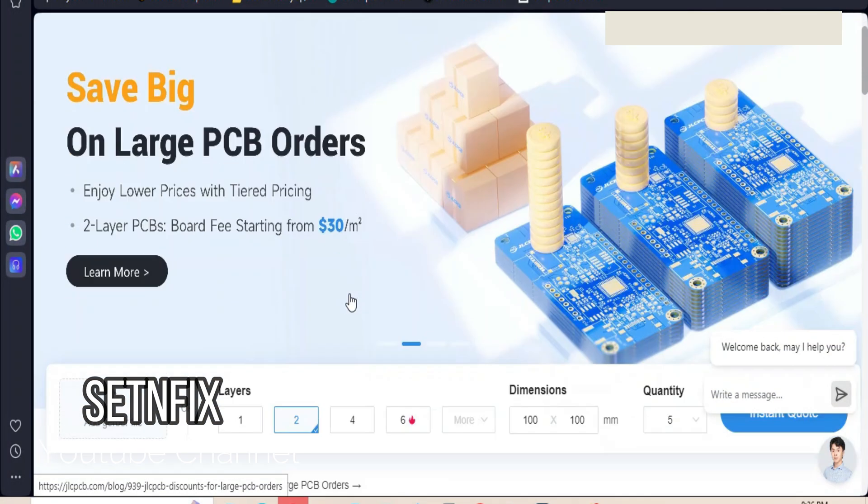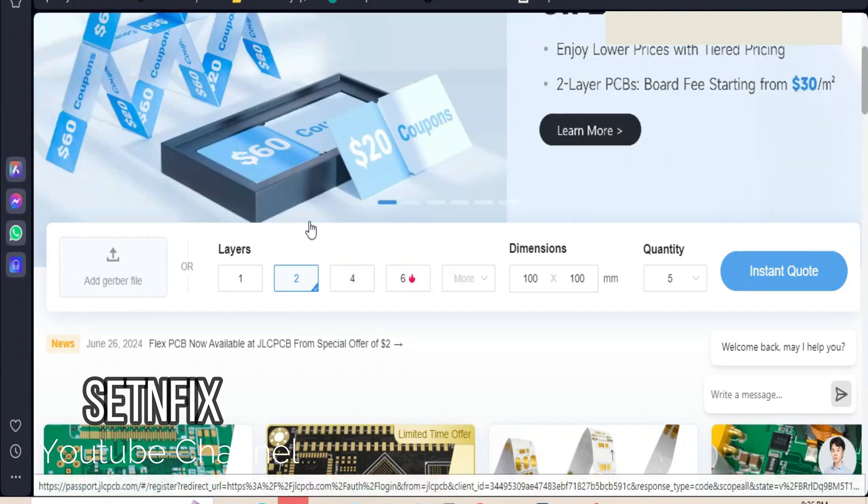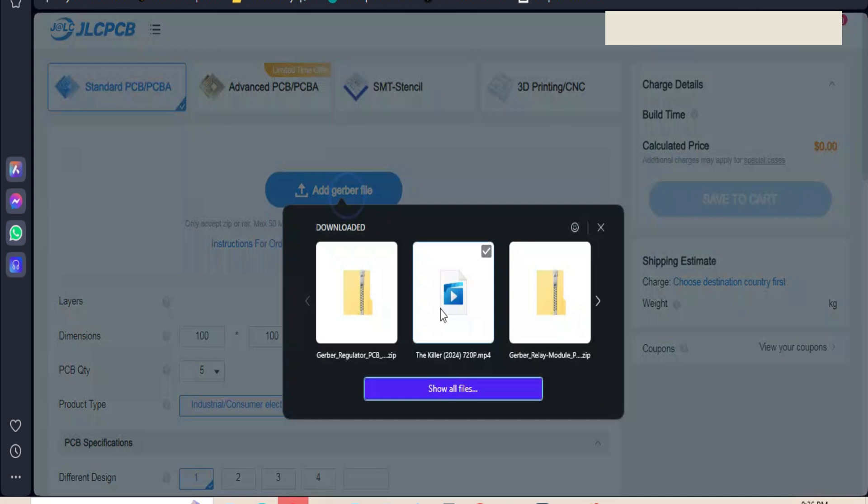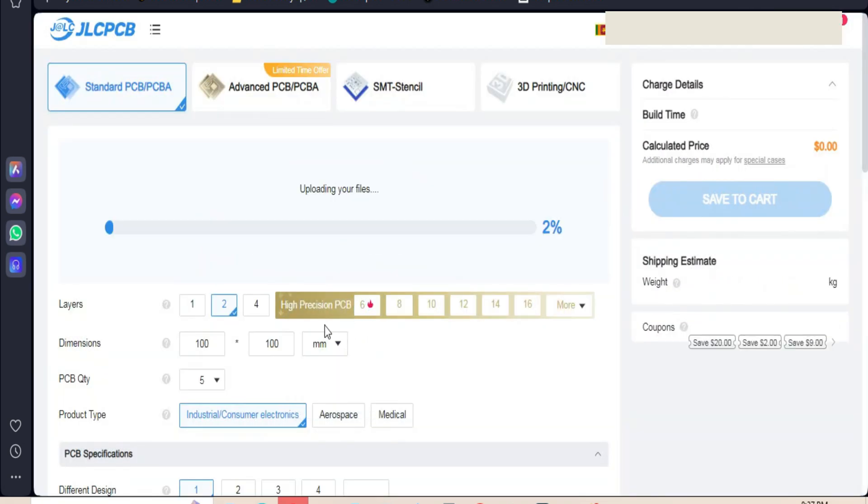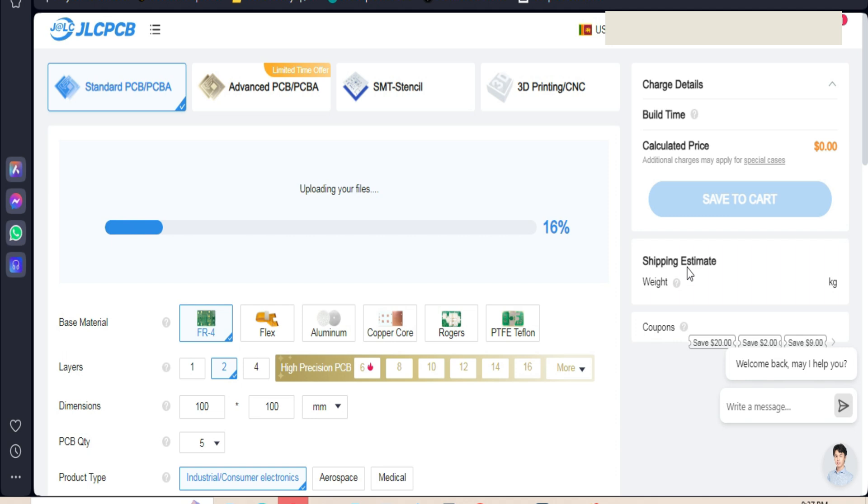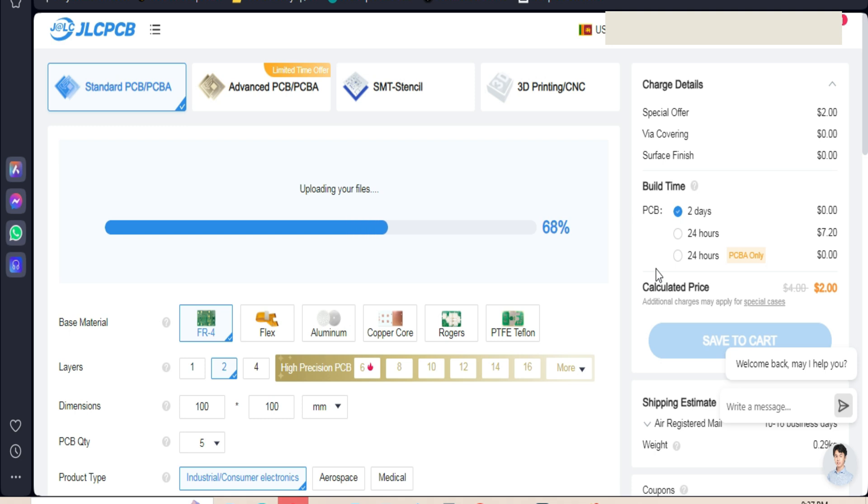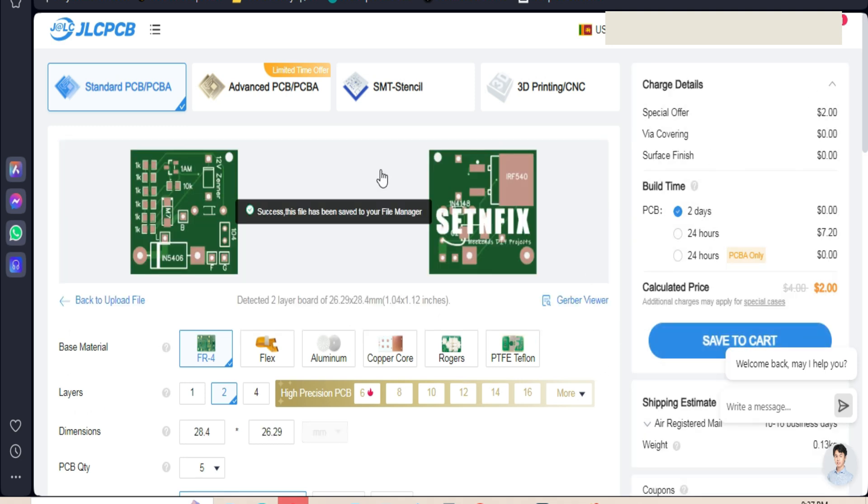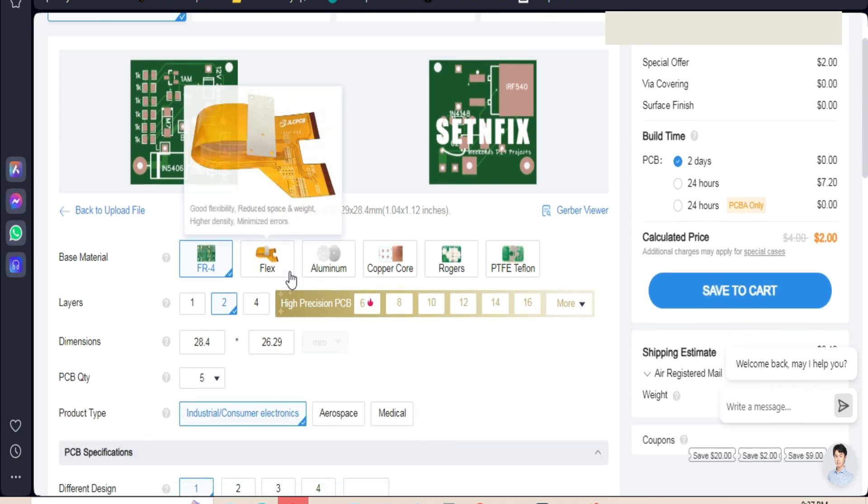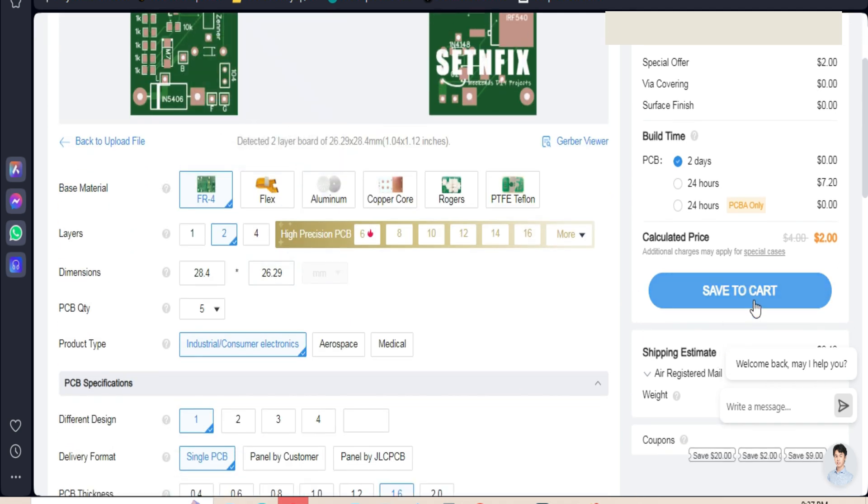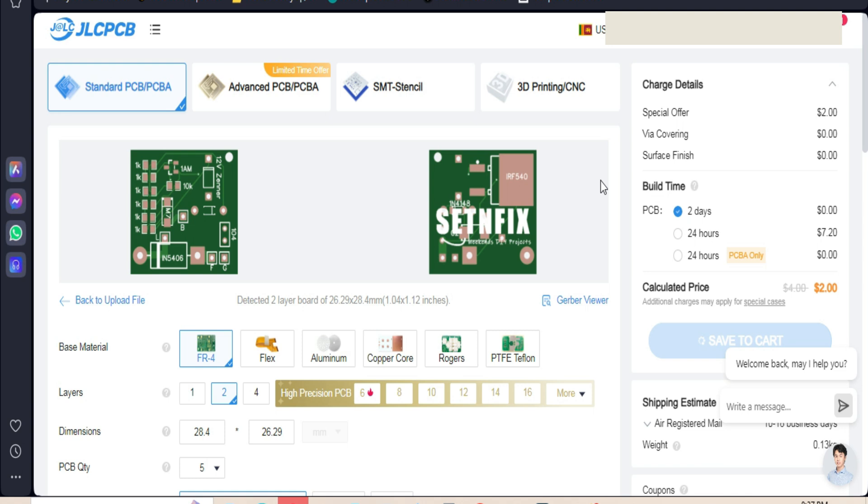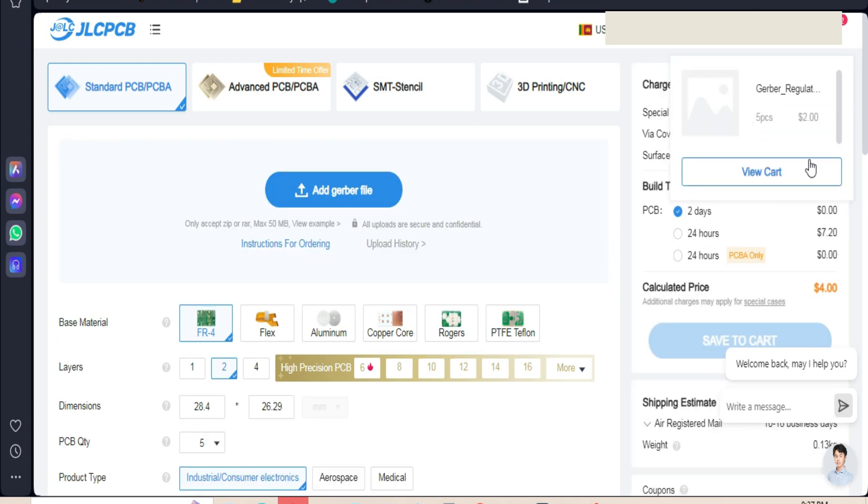Placing an order on the JLCPCB website is quick and easy. First, log into your account or sign up if you're new. Upload your PCB design files, making sure they meet the required specifications. Next, customize your order by selecting options like board size, layer count, color, and any special features you need. Once you're satisfied with the setup, review your order details, choose your shipping method, and proceed to checkout. After completing the payment, you'll receive an order confirmation, and your PCBs will be expertly manufactured and shipped to you promptly. For quality and precision, trust JLCPCB.